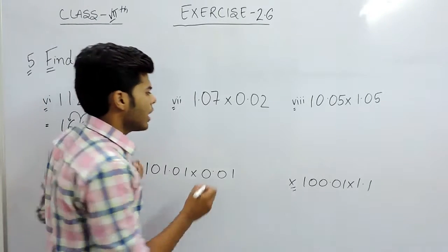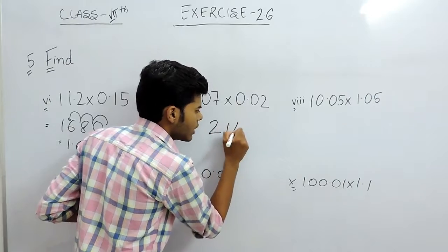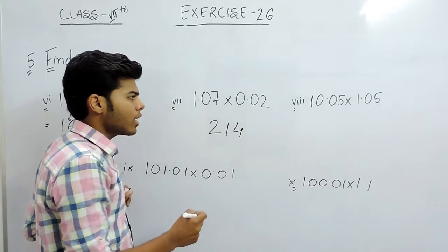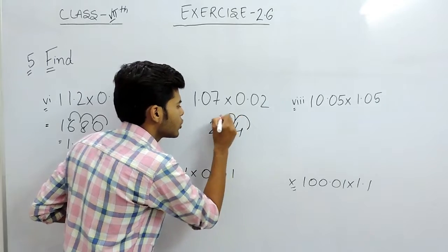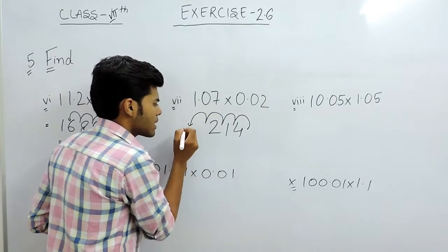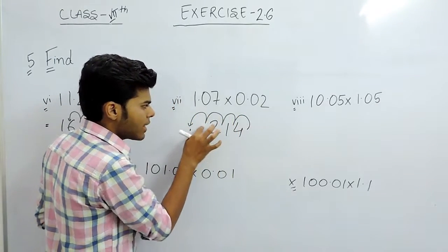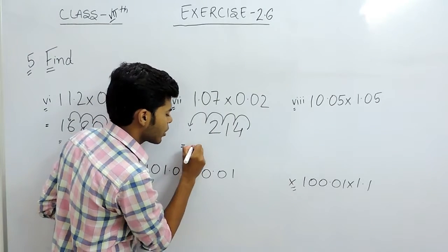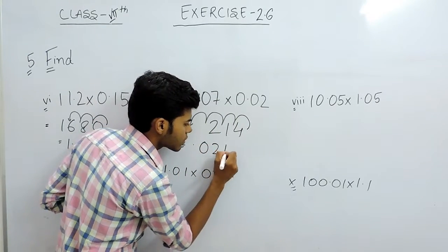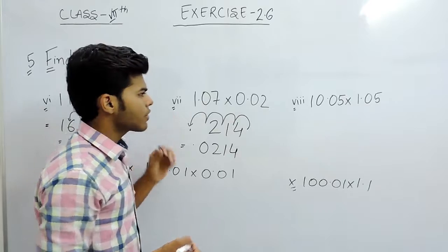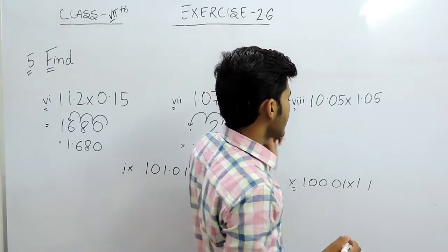Now in this one, it will give us 214. 107 multiplied with 2, and there are 4 decimal places, so 1, 2, 3, and 4. So the decimal point will come here. This place is vacant, so here we will put a 0, and this is the answer of the 7th part.